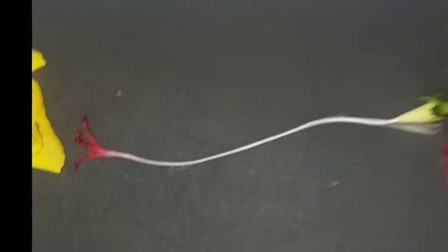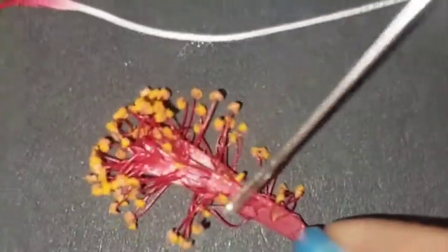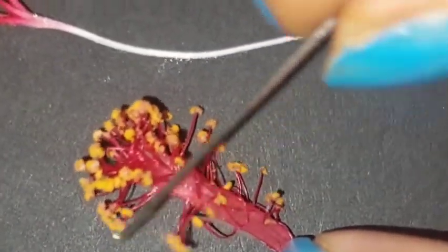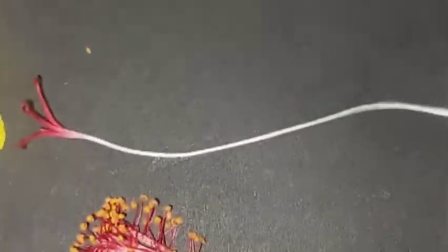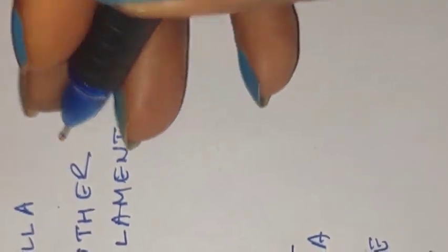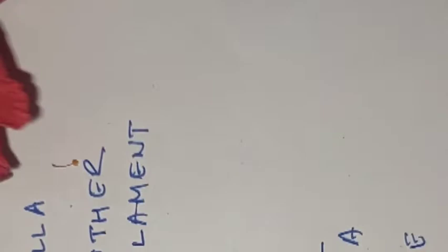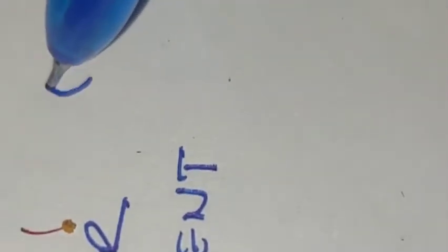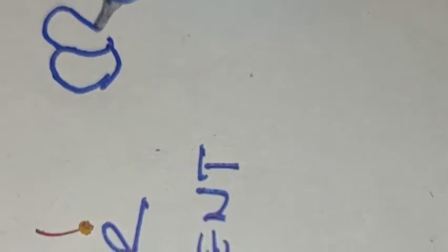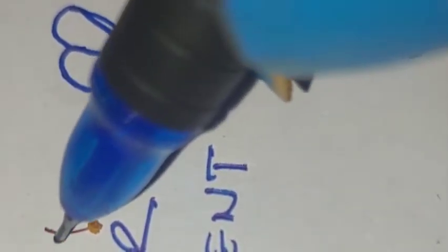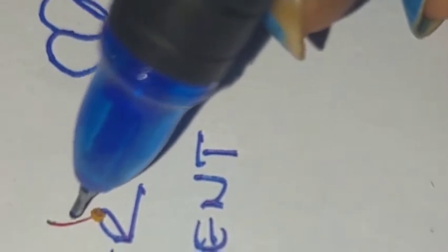This is stamen and this is anther, this yellow color. Its structure is, this is anther. Its structure is so tiny that it's not able to put it. This is filament. The anther has this kind of structure and this is filament. I have separated it.